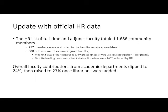Combining faculty senate data with HR data gave a total population of 1,600 community members. 757 of these were not listed on the faculty senate data, showing a discrepancy in who we count as faculty. Also, 608 of our faculty are adjuncts, meaning 35% of our campus faculty are adjuncts. HR also did not count librarians despite us holding non-tenure track status. Our overall number, as Daniel said, is that we have a quarter of our faculty contributing to the Scholarly Works Collection.